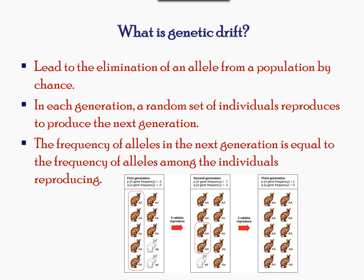Now let's explore beyond natural selection and mutation — the third kind of mechanism called genetic drift. Genetic drift is the change in the frequency of characteristics in a population by chance. It is very visible in small populations when offspring are randomly selected for the next generation.